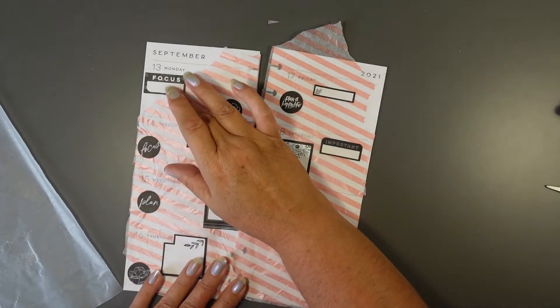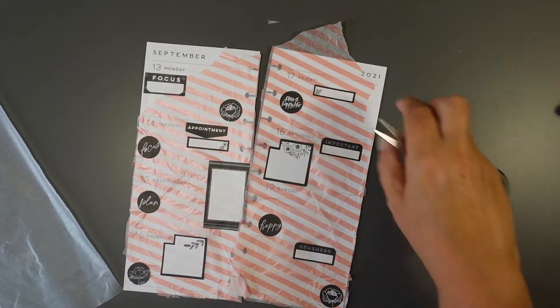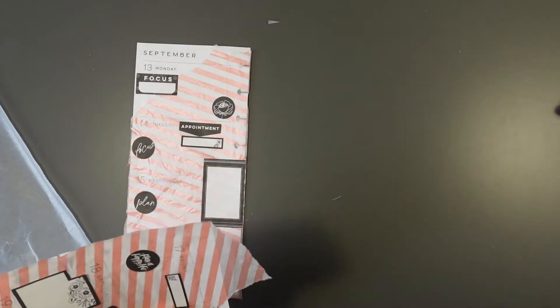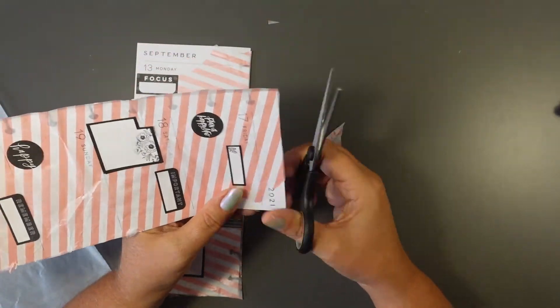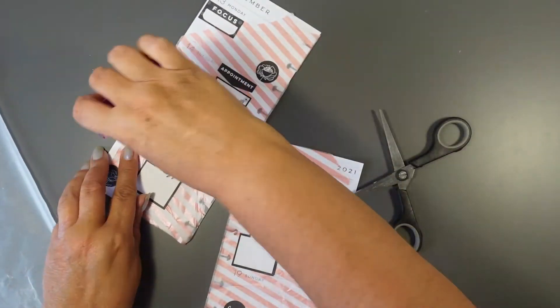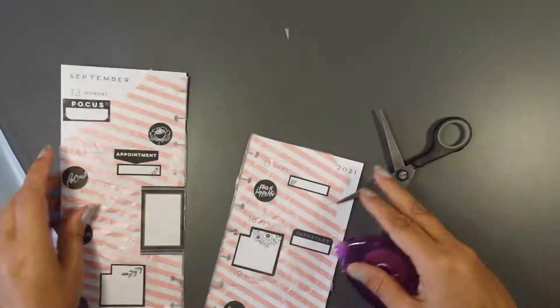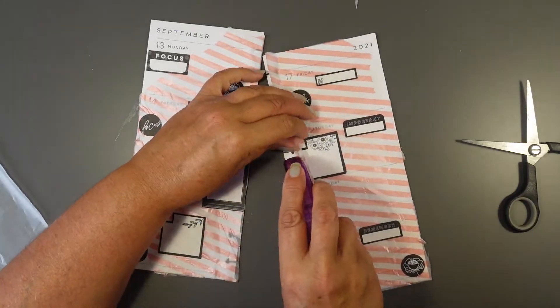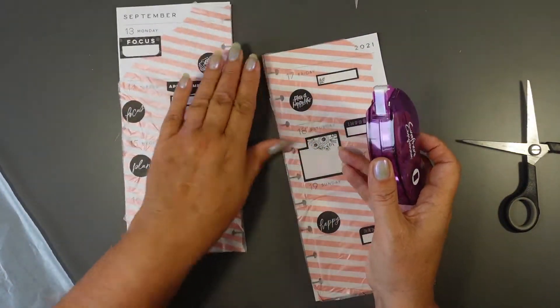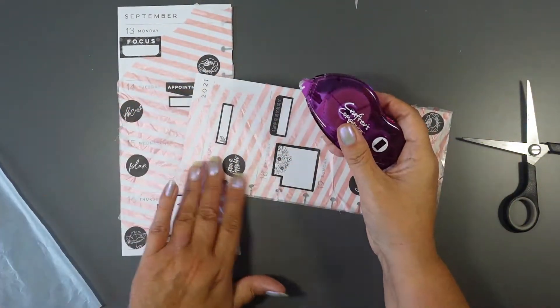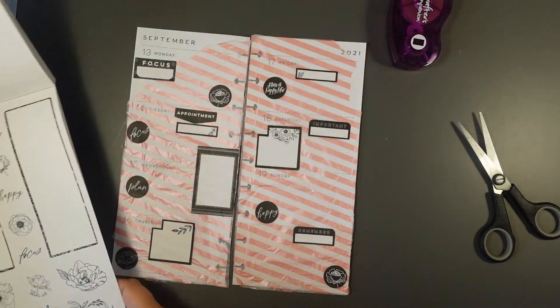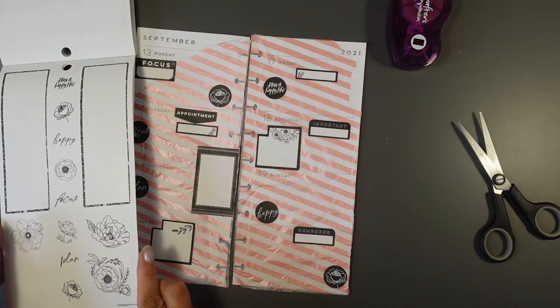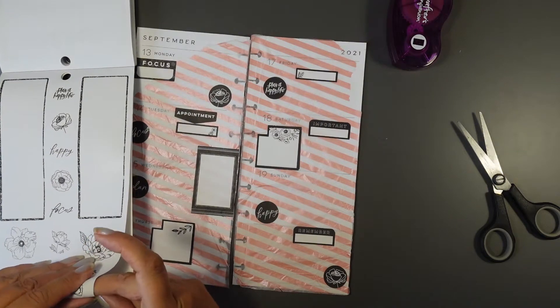Okay, so the next thing that I'm going to do is I'm just going to trim off what I don't need. I'll probably go for the paper actually. I think that will suit the spread better. I'll go for some paper.